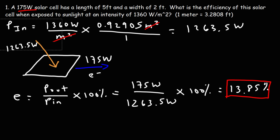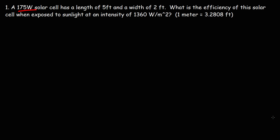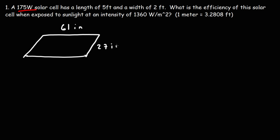Let's work on another example for the sake of practice, because sometimes you may not have the dimensions of the solar cell in feet — a lot of times you'll be given dimensions in inches. So let's say we have a solar cell with a length of 61 inches and a width of 27 inches. This solar cell generates a power of 200 watts. We're in a region where the solar intensity is still 1360 watts per square meter — typically between 1300 and 1400. What is the efficiency of this solar cell?